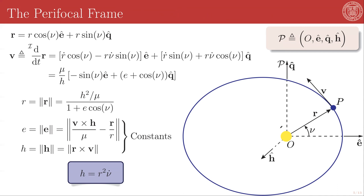However, we place the coordinate origin of this frame at the center of mass of one of these bodies. By convention, we typically put it at the center of mass of the larger of the two bodies, but the problem is entirely symmetric. We typically think of the smaller body as orbiting the larger body, even though we know that they both orbit each other.